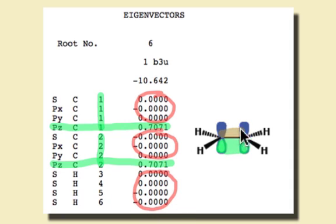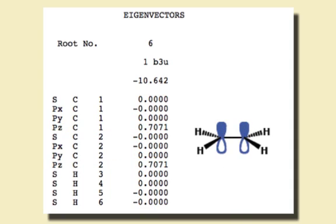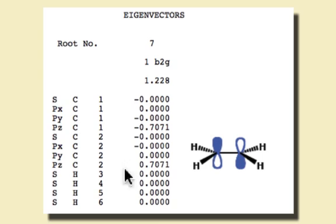The sign of those 2pz's are the same, so it makes a nice π bond. For molecular orbital number 7, we have a very similar situation, except that now the 2pz's on carbon 1 and carbon 2 have opposite signs.